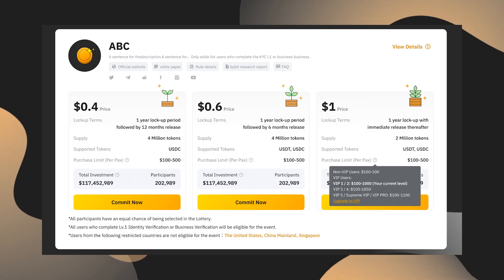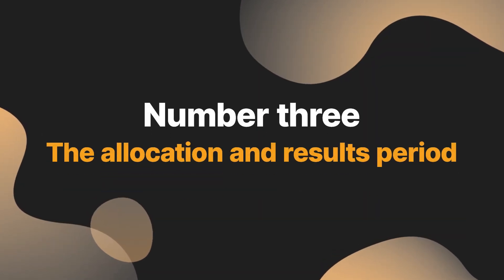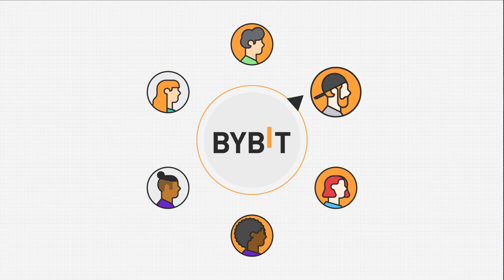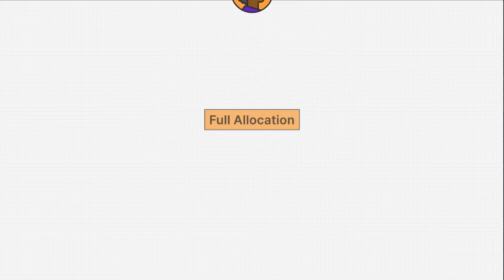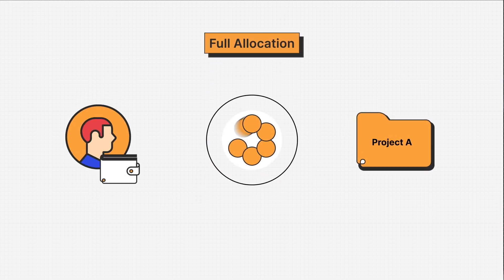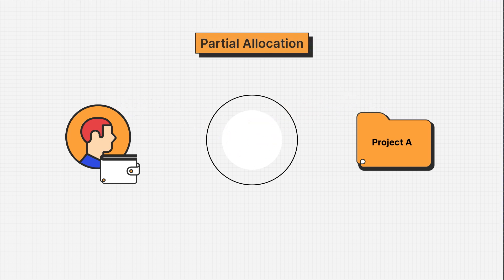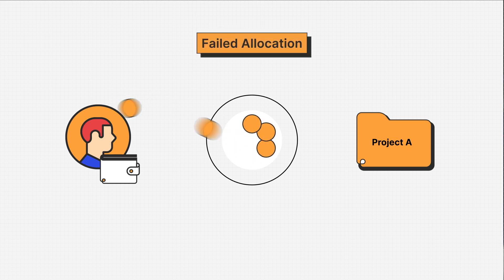The tokens you've chosen to commit to this project are now locked and cannot be transferred, traded, or withdrawn until after the next step. Once you've completed the subscription period step, all you need to do is wait for the winners to be drawn. Number three, the allocation and results period. Winners will now be randomly selected by our system. One of three things will happen to you: full allocation, meaning all of your tokens will be allocated to the sale; partial allocation, meaning a portion of your tokens will be allocated to the sale and the rest will be returned to you; or failed allocation, meaning all of your tokens will be returned to your account. After the results are announced, if you win the allocation, your tokens will be locked up and released according to the sale option you chose.